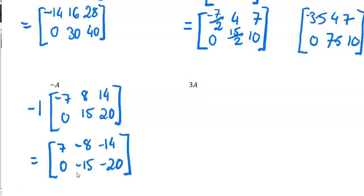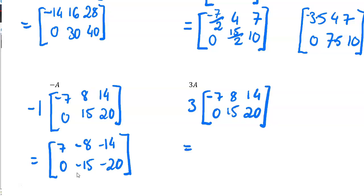Here I've got three times matrix A — three times by negative seven, eight, fourteen, zero, fifteen, twenty. Three times negative seven is negative twenty-one, three times eight is twenty-four, three times fourteen is forty-two, zero, three times fifteen is forty-five, and three times twenty is sixty.